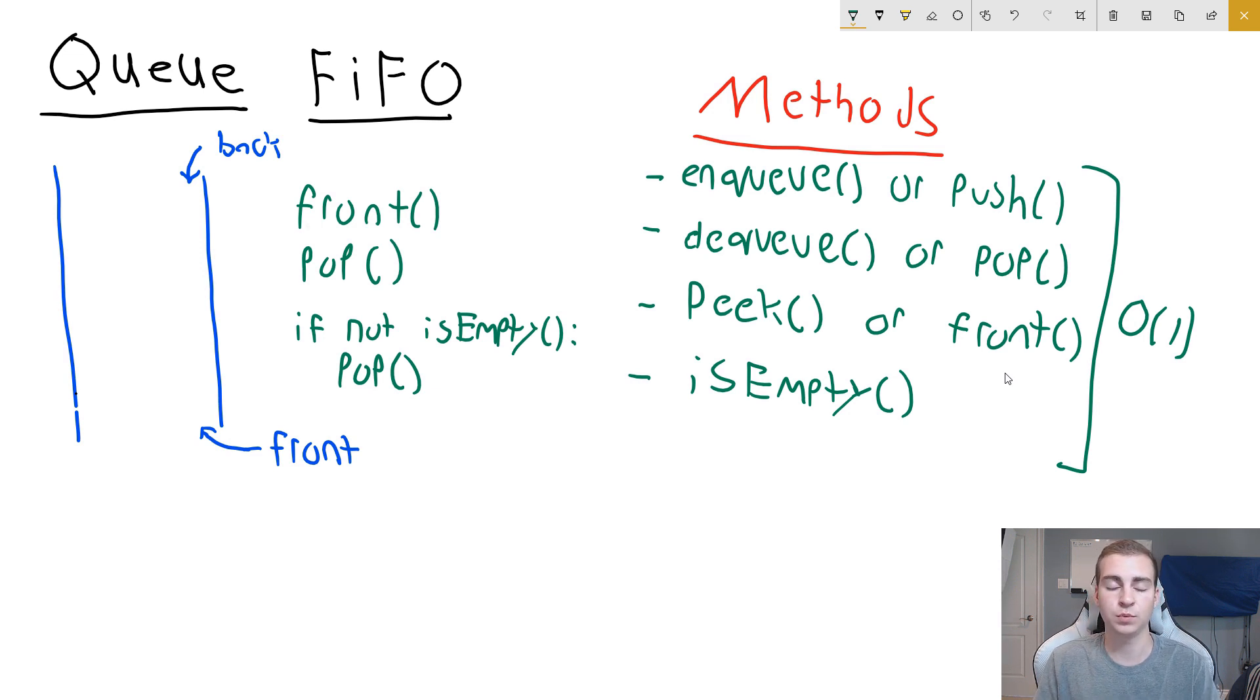Now depending on how you implement this queue and write the code, you may actually inadvertently change this time complexity. But if you write it properly in the way you're supposed to, then this should be in constant time, which means whenever you're peeking, dequeuing, enqueuing, pushing, popping, whatever, checking if the queue is empty, that'll happen in constant time.